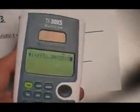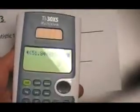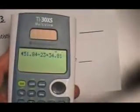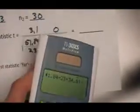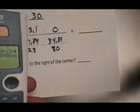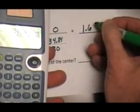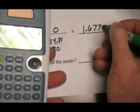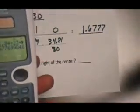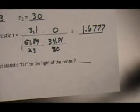Plus, and again don't need any parenthesis or anything here, 34.81 divided by 30. Close my parenthesis for my square root, press equals, and I get a value of 1.677, and we'll call that seven, three decimal places.